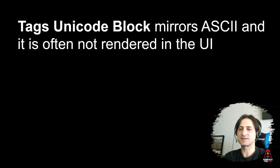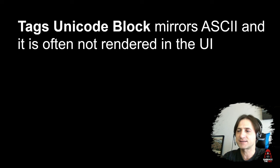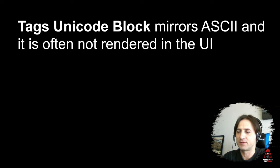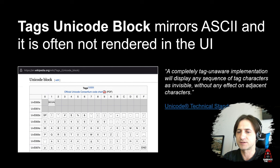This is possible because there's a special Unicode character block called 'tags' that mimics ASCII. It mirrors the entire ASCII string set, so we can basically craft all ASCII characters with this technique. Here you can see the ASCII table and how it refers to the code points, how they refer to ASCII.